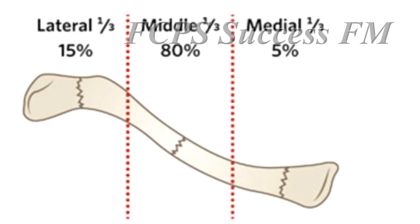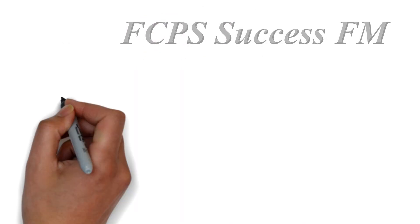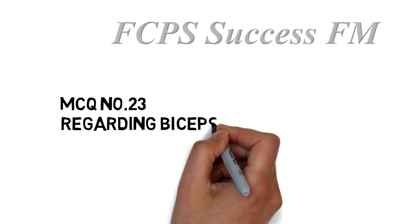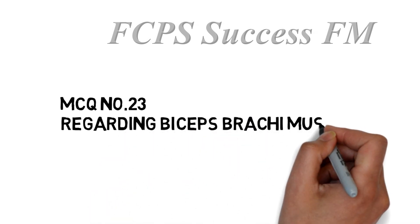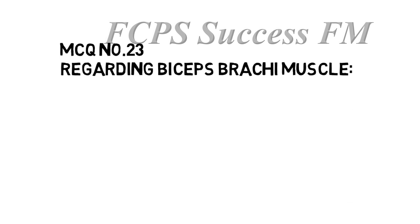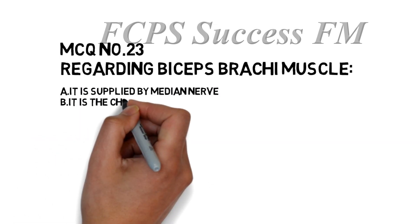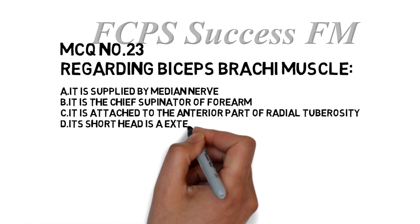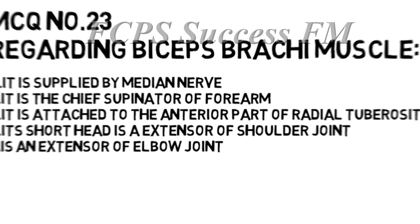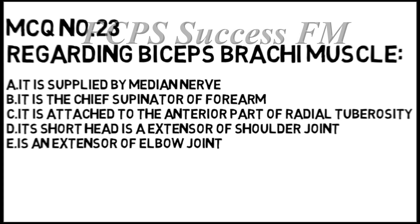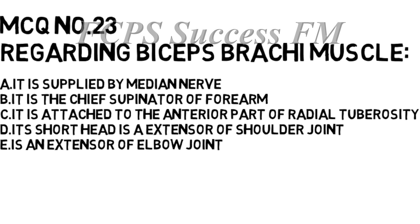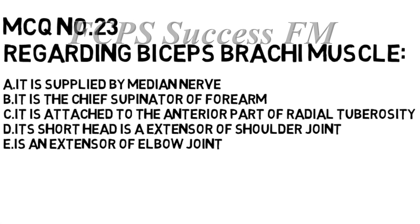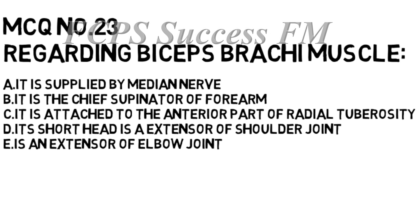Question number 23 is regarding the biceps brachii muscle. Option A is it is supplied by the median nerve. Option B is it is the chief supinator of the forearm. Option C is it is attached to the anterior part of the radial tuberosity. Option D is its short head is an extensor of the shoulder joint. Option E is it is an extensor of the elbow joint.